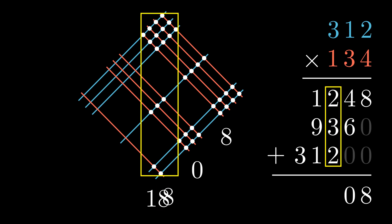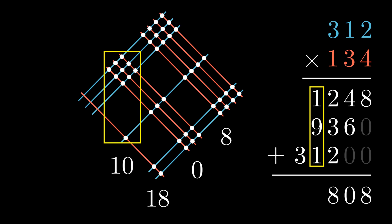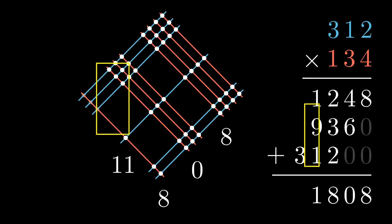We write down 8 in the result, and then again we carry that one over to the next column, from which we get 11. The ones go directly to the result line, while the tens digit will be used for the last sum, just like we did before.